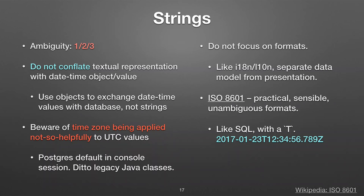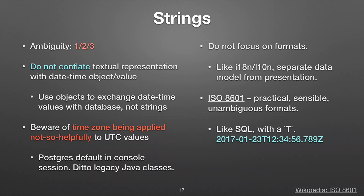Strings — this ambiguous date representation doesn't tell us if it's day, month, or year. A big concept is confusing the text representation with the date-time object itself. Databases and Java internally represent values — you don't care how — but it's not the text. Think of text as input to an internal value and then output from that internal value. ISO 8601 is the unambiguous format you should be using for strings — which is almost like the SQL format, except SQL standard puts a space in the middle instead of a "T".